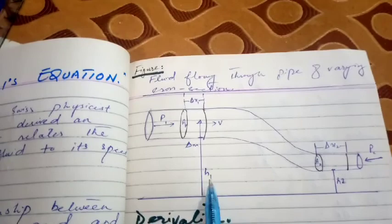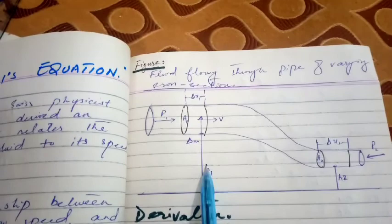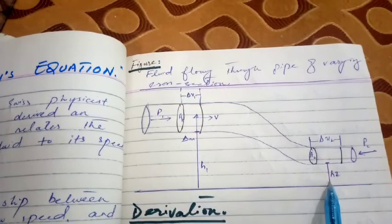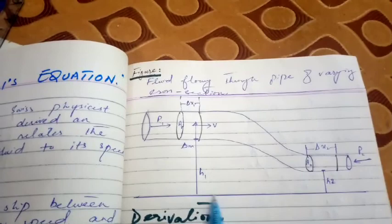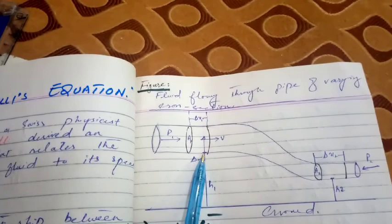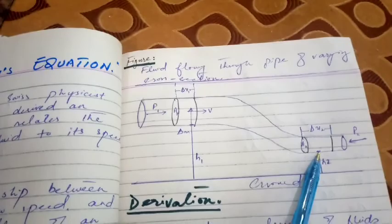One more thing visible in the figure is that the elevation or height of the pipe differs at each end. The elevation at the wider end is h1, and at the narrower end is h2. Taking the ground as the reference point, the pipe is elevated to height h1 at one end and height h2 at the other end.